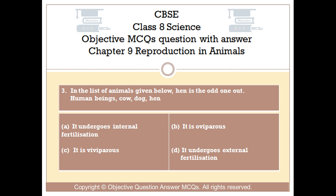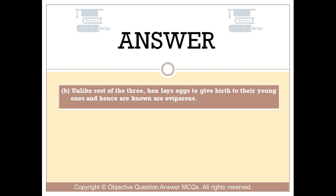The right answer is Option B. Unlike the rest of the three, hen lays eggs to give birth to their young ones and hence is known as oviparous.